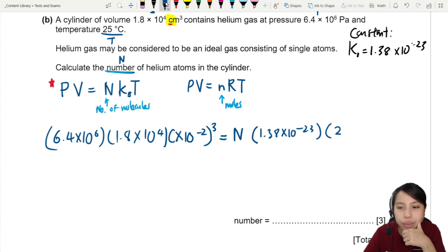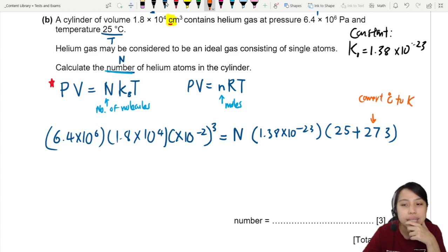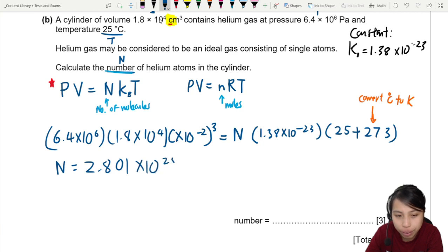Must convert to Kelvin. So, 25 plus 273. The purpose of this is to convert your Celsius to Kelvin. That's the unit we use in all these ideal gases. If all goes well, we press calculator correctly. It happens sometimes, miss a square somewhere, miss an alphabet. But you should get a number of about 2.801 times 10 to the 25. That'll be roughly about 2.8 times 10 to the 25 number of particles.